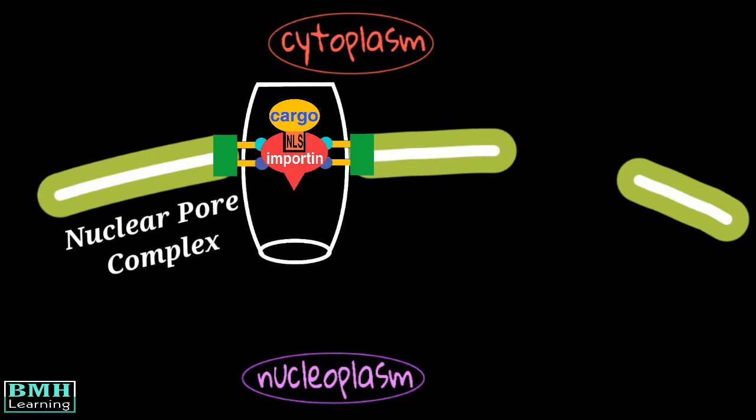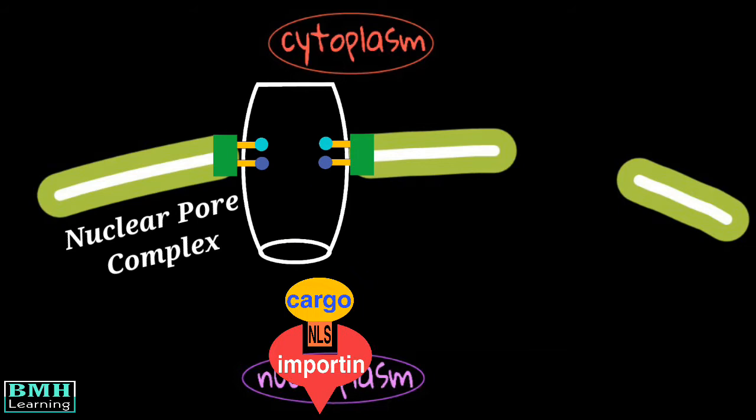Here, the importin protein interacts with the FG repeats of the nucleoporins. Once the complex of the importin and cargo reaches the NPC, the FG nucleoporins test them for their authenticity, and then they are given permission to enter into the nucleus.